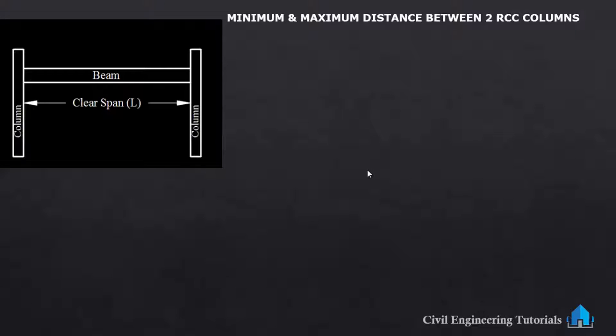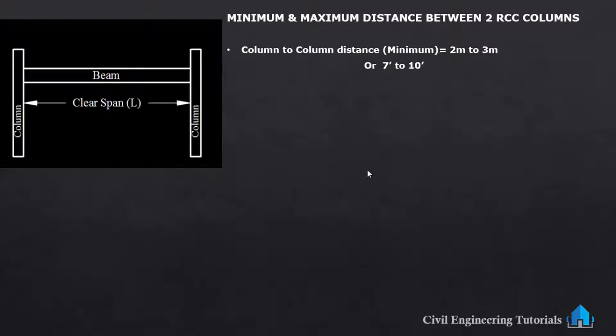Actually there is no definite rule for determining the distance between two concrete columns in commercial buildings. In commercial buildings, as per the client's requirement, the architect provides the largest possible spacing for aesthetic reasons. Sometimes the client has a demand for a particular measure of spacing, so the architect increases the spacing between two columns. However, here we are going to discuss residential buildings only.